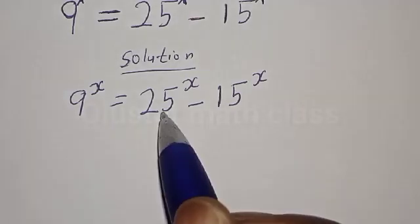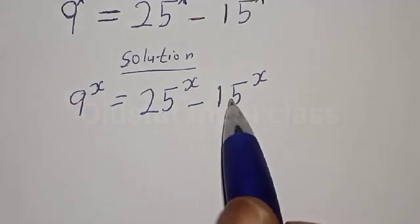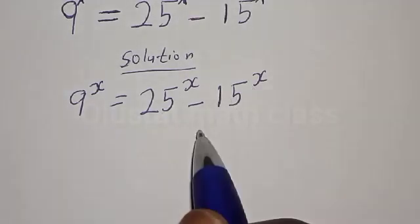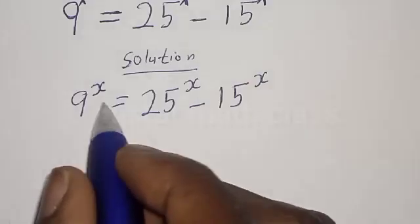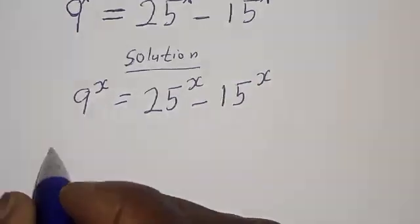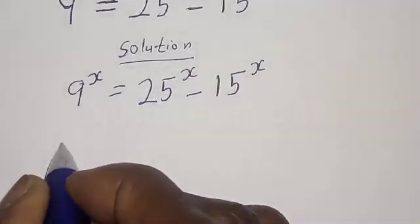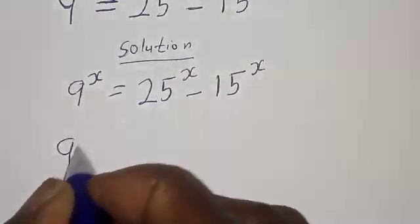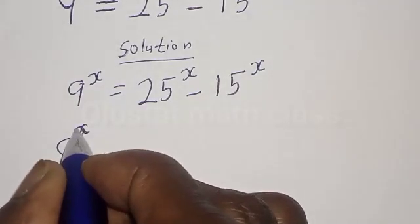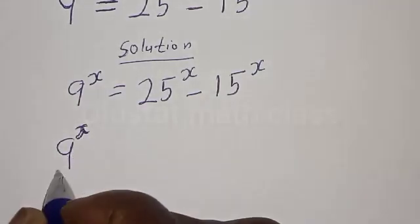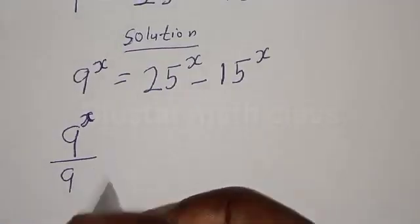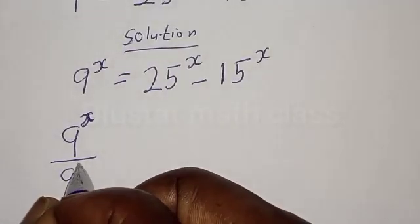This is a perfect square, this is a perfect square, and this is not a perfect square — we have 15 raised to power x. Let's divide through by 9 raised to power s. Then we have 9 raised to power x divided by 9 raised to power s.